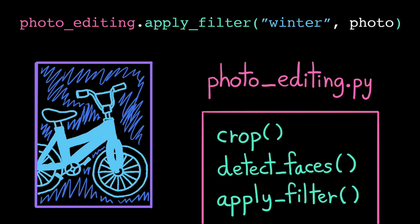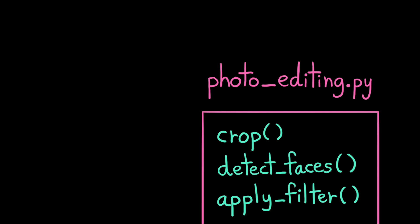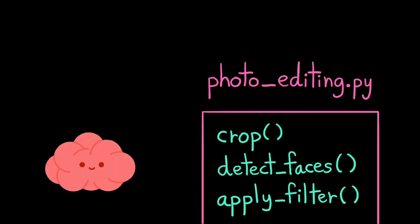We've used functions written by other people before in the form of built-in functions like print, input, round, and length. These are different from modules because they're loaded into Python by default. We can access the print function anywhere we write Python code. With modules, we have to explicitly import the module into our code first before we can access any of its functions.